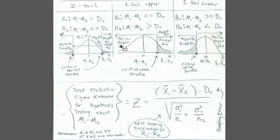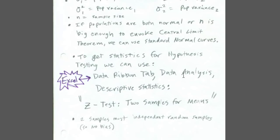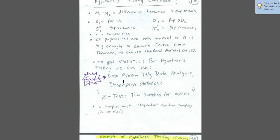The reject region and fail-to-reject regions are exactly the same as last chapter. Our test statistic is z, because we know sigma — the population standard deviation. We take from our sample the difference between x-bar sub 1 minus x-bar sub 2, subtract the hypothesized difference, and divide by our standard error. That gives us a value to compare against the critical value, or we can calculate a p-value from z.